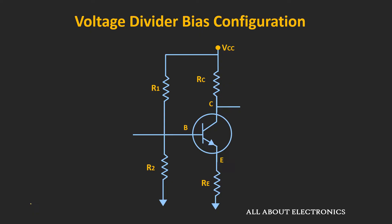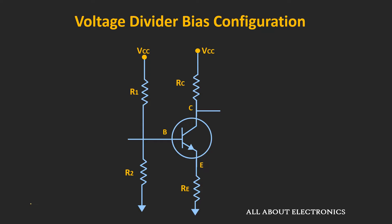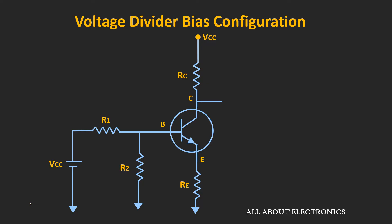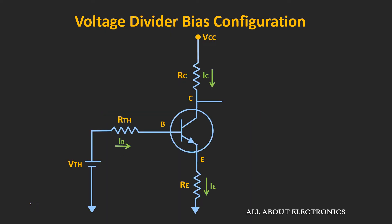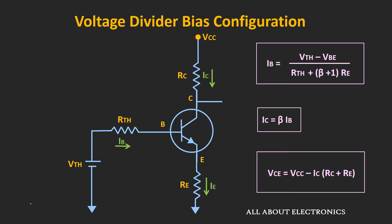Let me quickly go through the procedure we followed during the analysis. We found the Thevenin's equivalent circuit for this voltage divider circuit — that means we found the Thevenin's equivalent resistance Rth and the voltage Vth. Then by applying the KVL equations on the input and output side, we got these expressions. During analysis, we often write the collector current Ic as β times Ib, but actually it is given by a fuller expression. Usually, as the reverse saturation current is in the nanoampere range, this second term is often neglected.